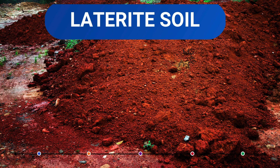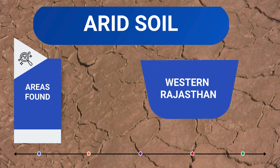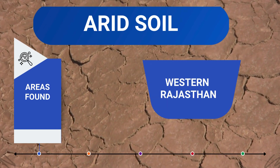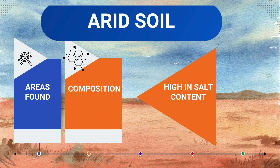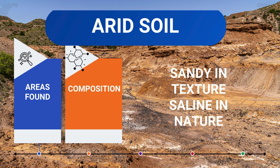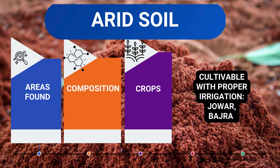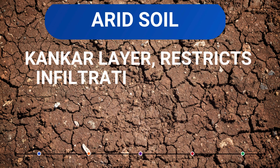Arid Soil, as the name suggests, is a dry kind of soil found along the deserts of Western Rajasthan. In terms of composition, it is extremely high in salt content and lacks humus and moisture. It is sandy in texture and saline in nature. In terms of crops, the soil is cultivable with proper irrigation, so Jowar and Bajra can be cultivated in arid soil. The Kankar layer present in this soil restricts infiltration of water.